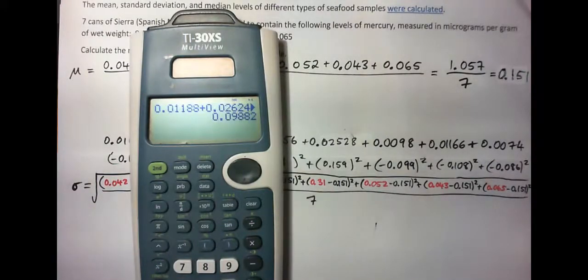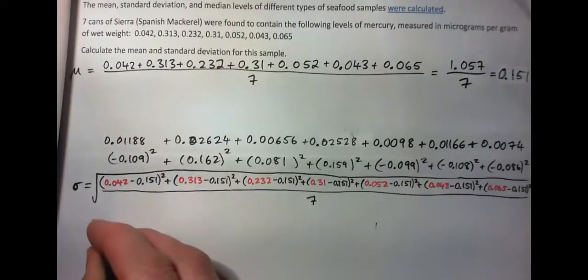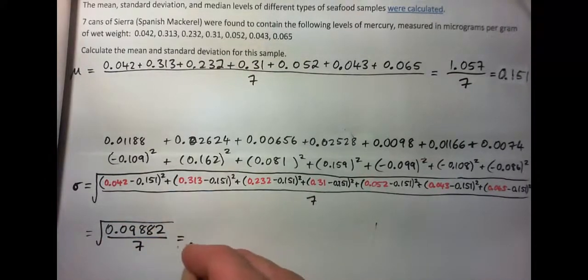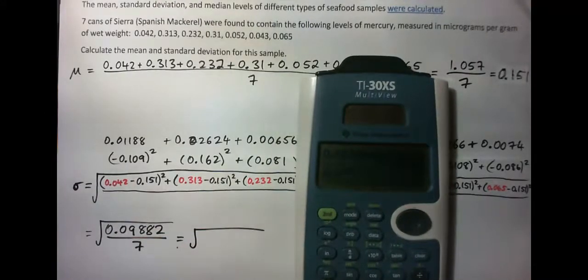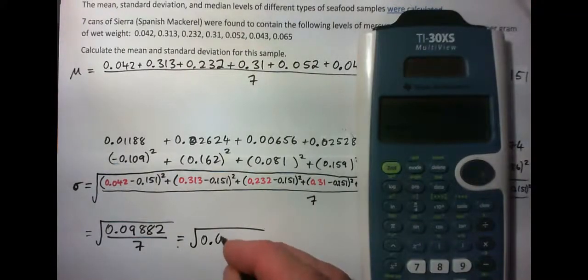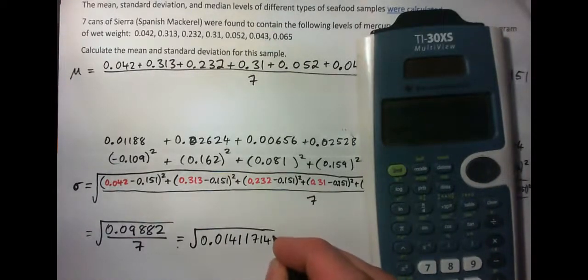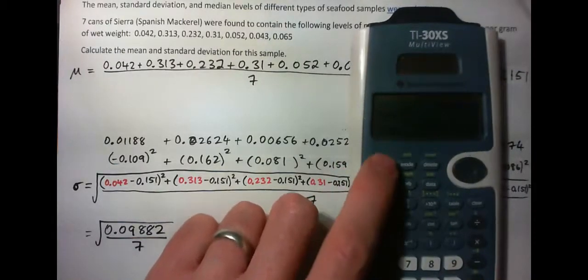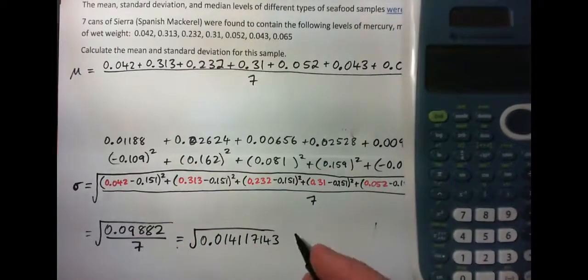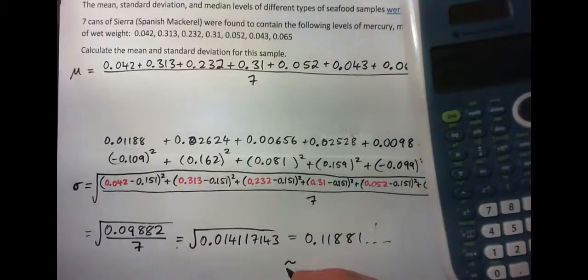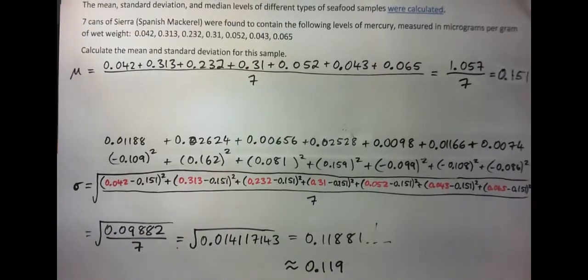0.01188 plus 0.0262 plus 0.00656 plus 0.02528 plus 0.0098 plus 0.01166 plus 0.0074, and so we're getting square root of 0.09882 over 7, which is the square root of 0.014117143, take the square root of the answer, so I'm going to go second square root, plug in the answer, and that ends up being 0.11881, or to three decimal places, 0.119, which is what they had in the study, so that is the standard deviation.